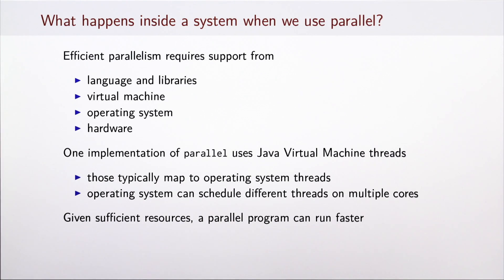How did we define parallel at a very high level? It turns out that efficient support for parallelism requires support from the programming language and its libraries, also the virtual machine in case programming language runs on top of a virtual machine, as well as the operating system and the hardware. Our specific implementation of parallel uses Java virtual machine threads, and they typically map to operating system threads. Operating system in turn can schedule different threads on multiple cores. That means that if we do have multiple hardware cores, a parallel program can in fact run faster. If we happen to be running that computation on a machine that does not have multiple parallel cores, or they are busy doing some other computation, then these different layers of the software stack will still allow us to run the computation, but we will not get the benefits of parallel execution.